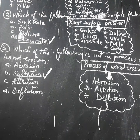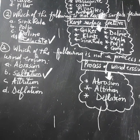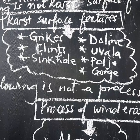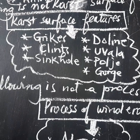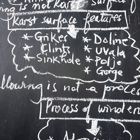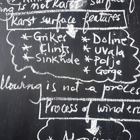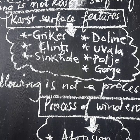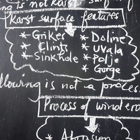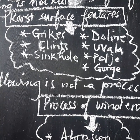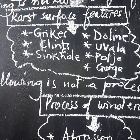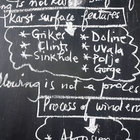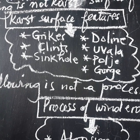When you look at the features shown aside, you may find that we have about seven karst surface features. We have: Grikes, Clint, Sinkhole, Dorine, Uvara, Polje, and Gorge. So therefore, we don't have stalactite as a surface feature.